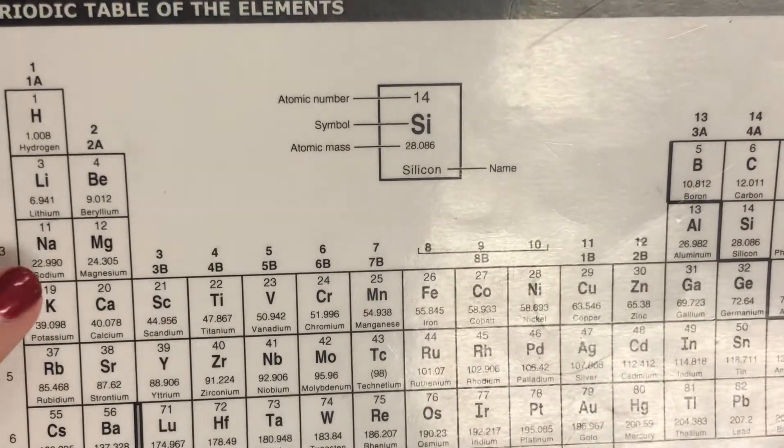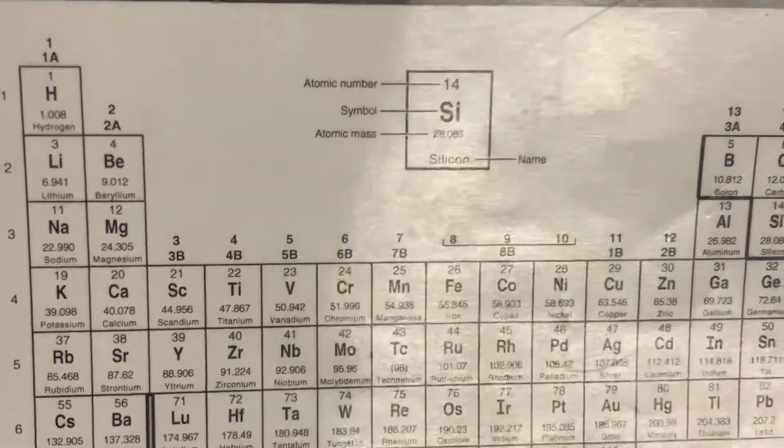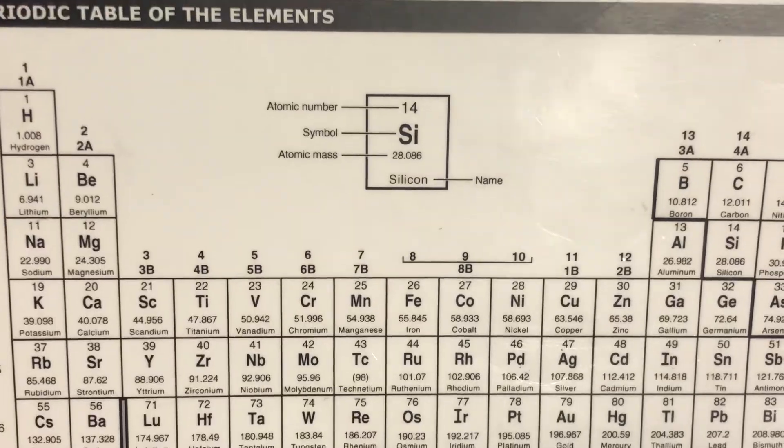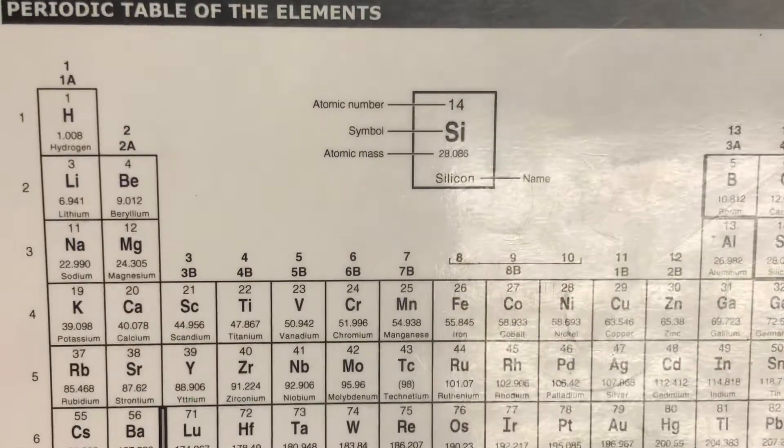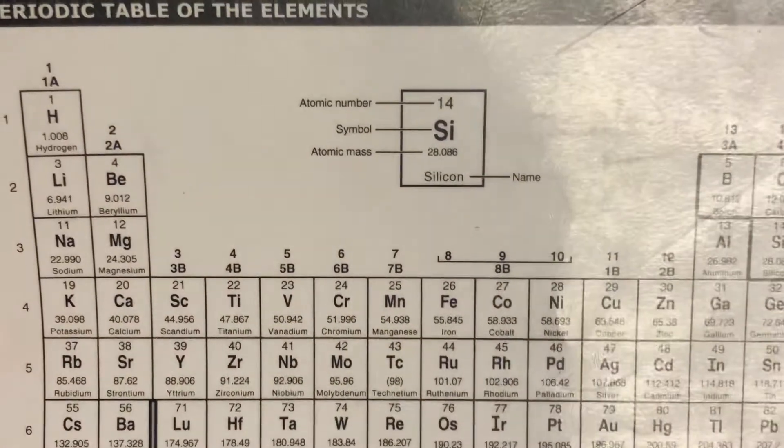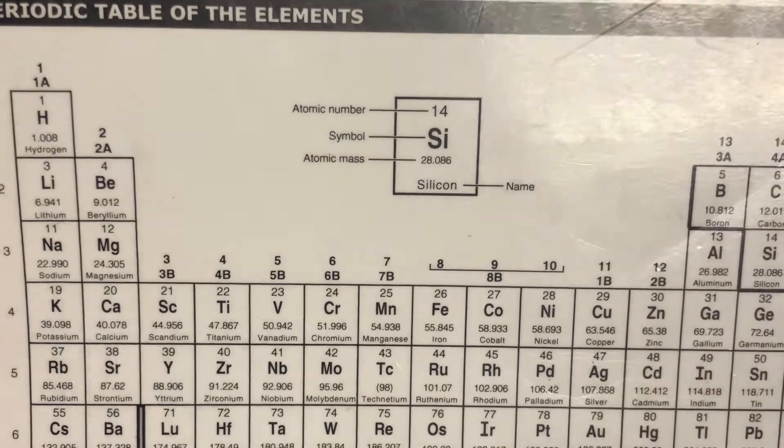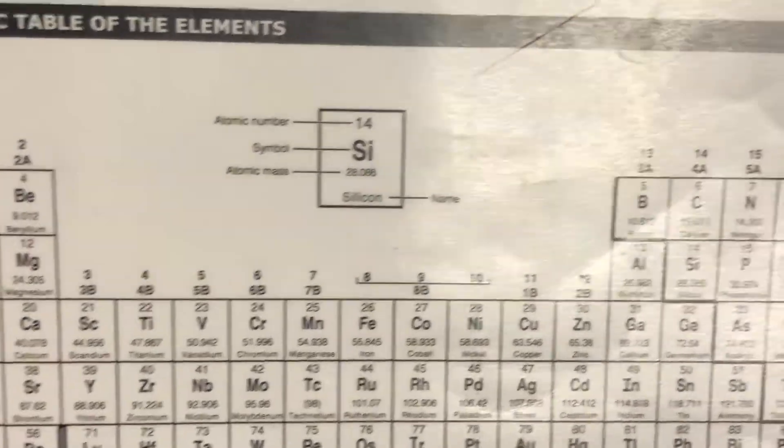Magnesium is a metal. It is in the first two columns, which would make it a representative metal. Since I know that, I know that I have to figure out its charge based off of its number of valence electrons. It's in column two, which means it has two valence electrons. And that means it will donate those two, and so it will have a charge of positive two.